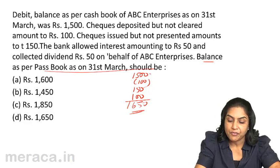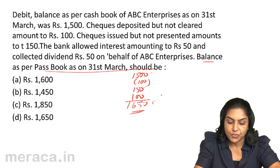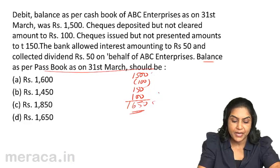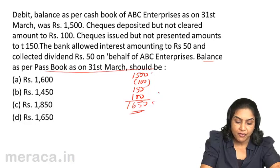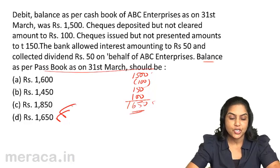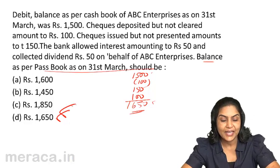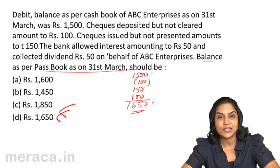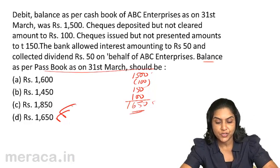We began with a favorable balance and we ended with a favorable balance, and therefore our final answer should be 1700.